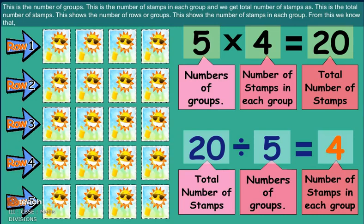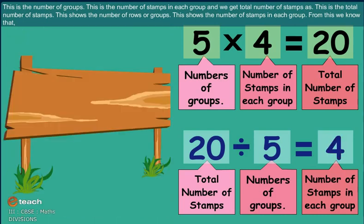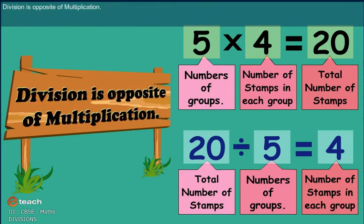This is total number of stamps. This shows number of rows or groups. This shows number of stamps in each group. From this we know that division is opposite of multiplication.